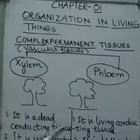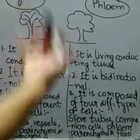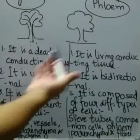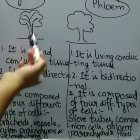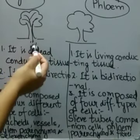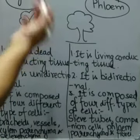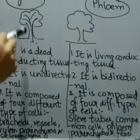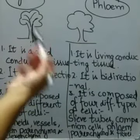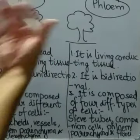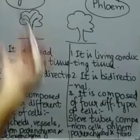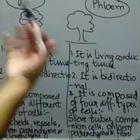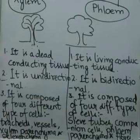Xylem is a dead conducting tissue and its function is to transport water and dissolved minerals from roots to other parts of the plant in an upward direction. It is composed of different types of cells: tracheids, vessels, xylem parenchyma, and xylem sclerenchyma. They also provide mechanical strength to the plant.